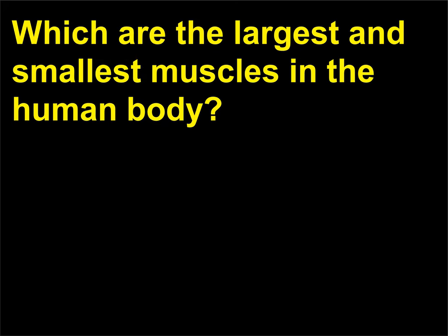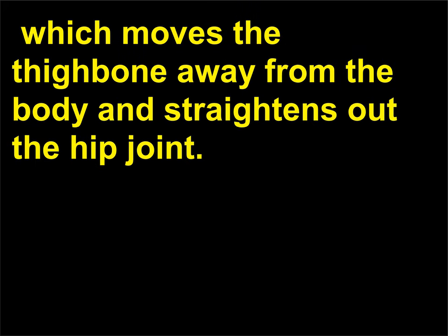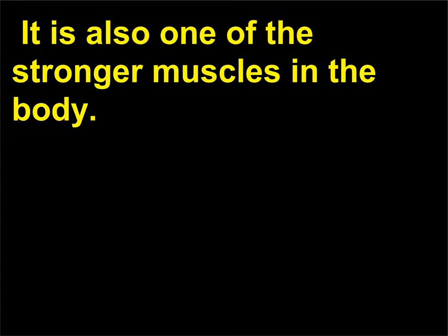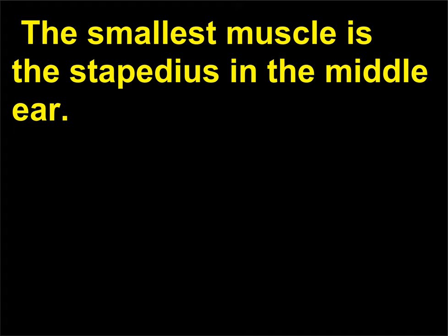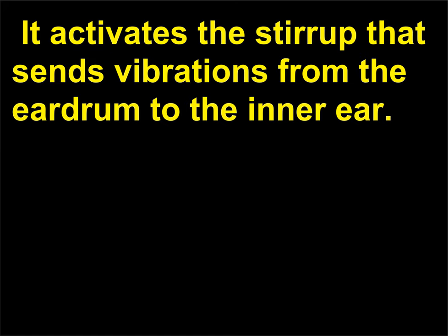Which are the largest and smallest muscles in the human body? The largest muscle is the gluteus maximus, or buttock muscle, which moves the thigh bone away from the body and straightens out the hip joint; it is also one of the stronger muscles in the body. The smallest muscle is the stapedius in the middle ear. It is thinner than a thread and 0.05 inches (0.127 centimeters) in length, and it activates the stirrup that sends vibrations from the eardrum to the inner ear.